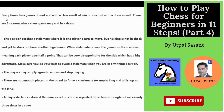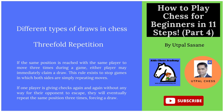Draw by threefold repetition: if the same position is repeated three times, it can be a draw. Both players must repeat the same moves — not just one side, but both sides. On the third repetition, a player can claim the draw. The arbiter will then check the score sheet to verify whether the position was truly repeated three times before declaring it a draw. You cannot claim it after just two repetitions.